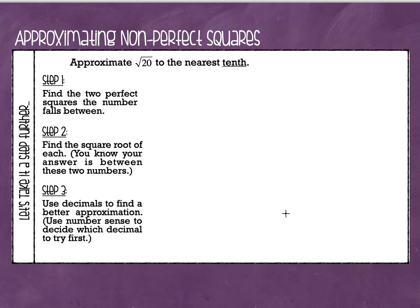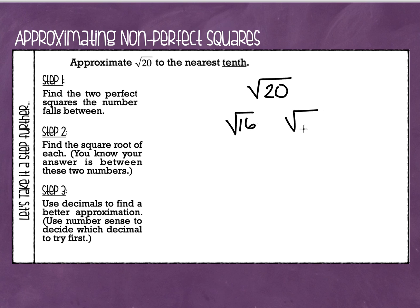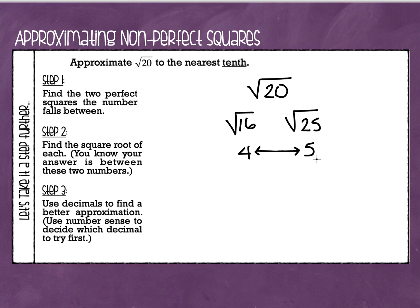Now we are going to approximate the square root of 20 to the nearest tenth, meaning we want one number after the decimal point. The square root of 20 falls between the perfect squares 16 and 25. The square root of 16 is 4 and the square root of 25 is 5, so the square root of 20 is going to be somewhere between 4 and 5 — it's going to be 4 point something. That's what I want to find out because I'm finding the approximation to the nearest tenth, so I want one number after the decimal point.